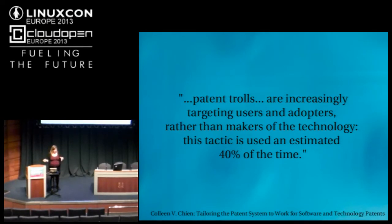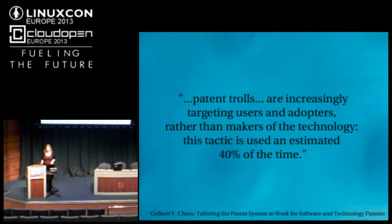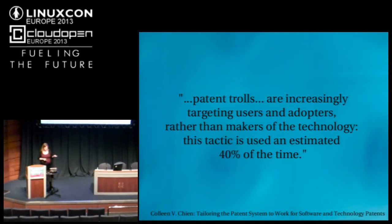In Germany and some other countries, you have an innocent user defense, so you can't sue the user of a technology — you have to sue the creator. That's great unless you have users in a different country who will get sued. If you're putting software out internationally, patent trolls can't go after your German users and adopters, but they could go after your US users and adopters. You could just not send software to the US, but increasingly more countries are harmonizing with the US.